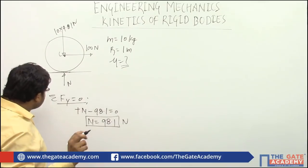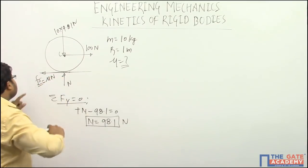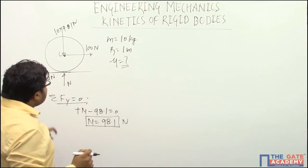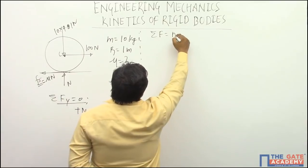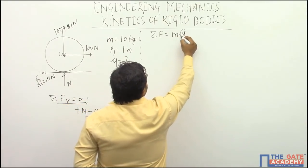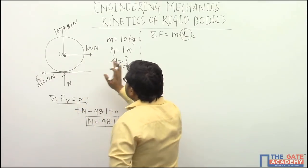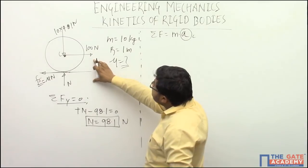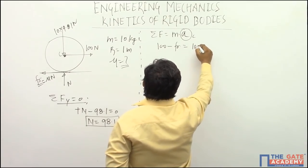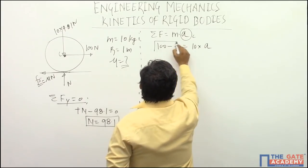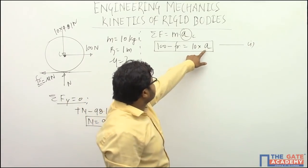Without the coefficient of static or kinetic friction, we cannot find the frictional force directly, so I will write it simply as frictional force F. Applying Newton's second law for translation — summation of forces equals mass times acceleration — along the horizontal direction, we get: 100 minus F equals mass times acceleration. This is our first equation, with acceleration and frictional force both unknown.